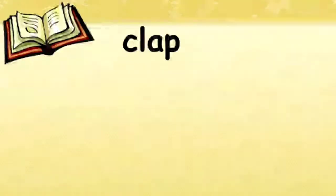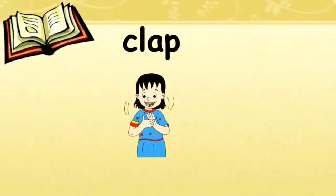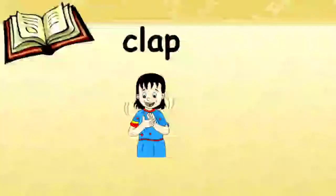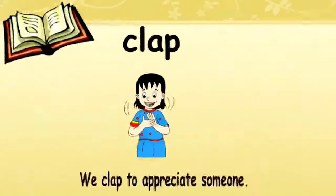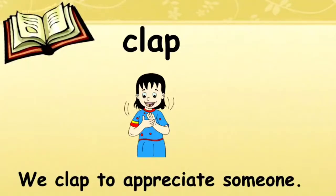Let's look at the picture to understand the word better. You can see a girl — look at the position of her hands and palms and you can easily understand how she is clapping. I have used the word in a sentence: we clap to appreciate someone. Suppose when your friend wins, what do you do? You clap for him. So we clap to appreciate. This is the end of video 2.